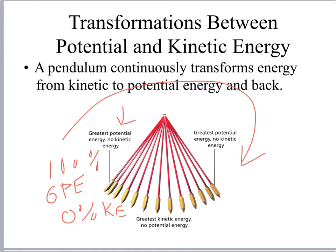At the bottom of the pendulum's swing, it has the highest kinetic energy — 100% kinetic and 0% potential. As the law of conservation of energy states, during this process some energy is going to be lost due to other circumstances such as friction. So whatever energy you start with, once it completes one full cycle, it's not going to have the same amount — some will be lost.